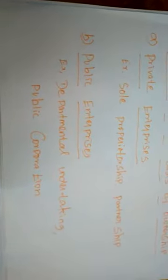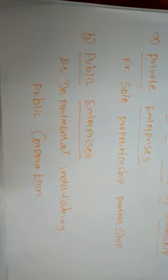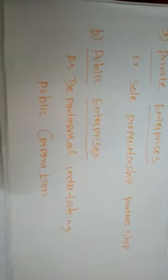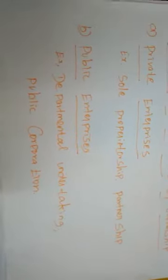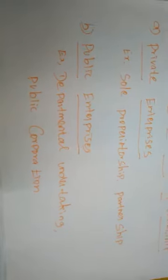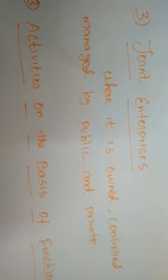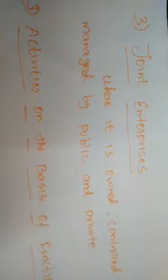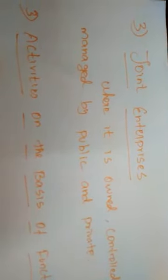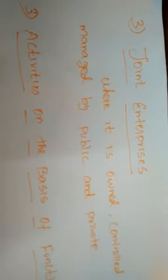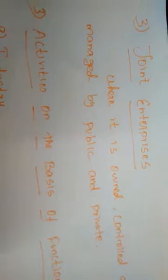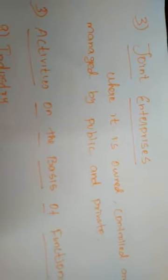Sometimes it will be both. For example, Departmental Undertakings and Public Corporations or government companies — state trading companies and so many other companies. Another one is Joint Enterprises. Joint Enterprises means it is owned, managed, and controlled by both government and private entrepreneurs. In our book, Maruti Suzuki is mentioned as an example, but so many other companies also exist in our nation in the form of Joint Enterprises.